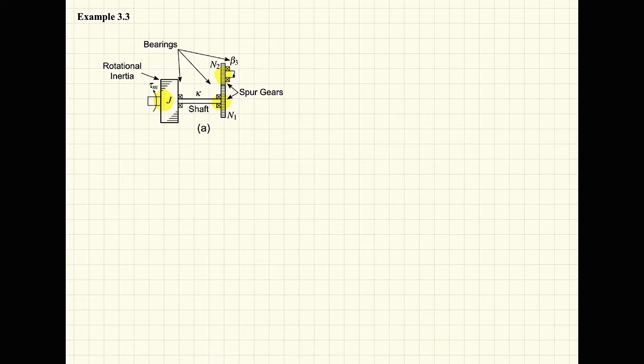At the first one junction, we are going to have an input torque. So we will place an effort source which supplies the torque tau m. Also, at this one junction, we have both a rotational inertia and a bearing. So I am going to place an I element off the one junction to represent the rotational inertia J, and then I will place an R element to represent the bearing with damping constant beta 1.